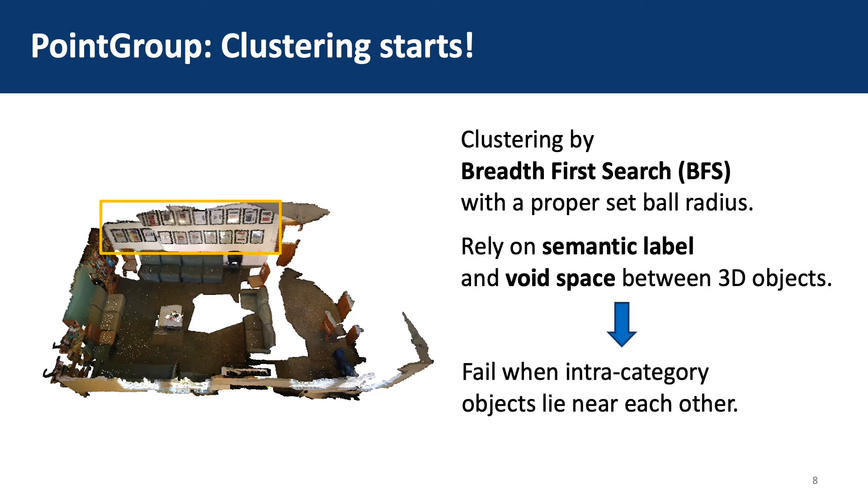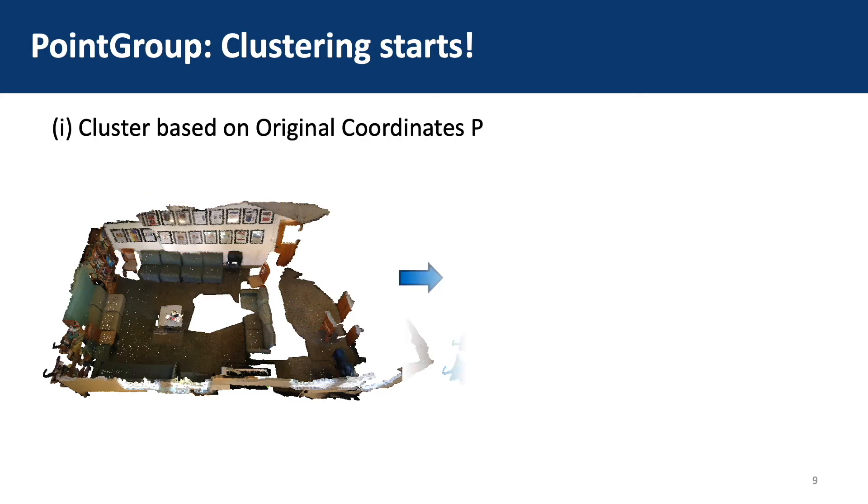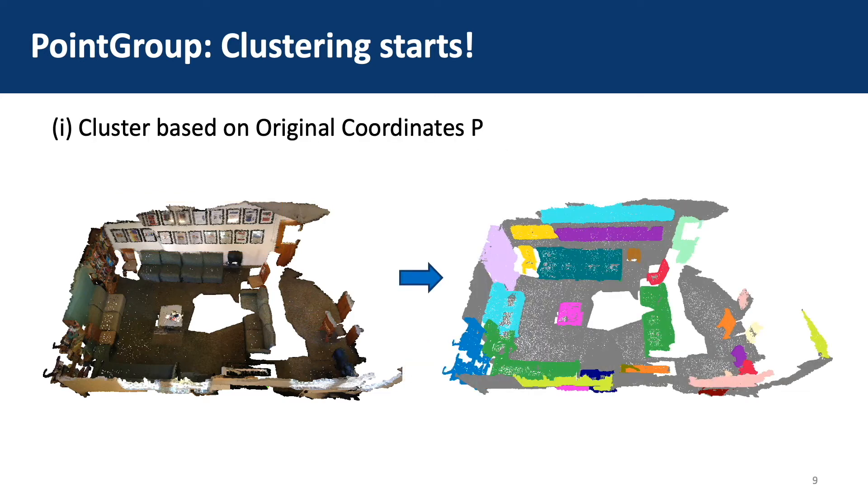So it may fail when two intra-category objects lie near each other. For example, in this scene, when clustering based on the original coordinates P, some pictures hanging on the wall are wrongly grouped into a single cluster.